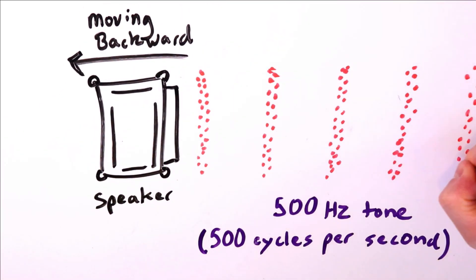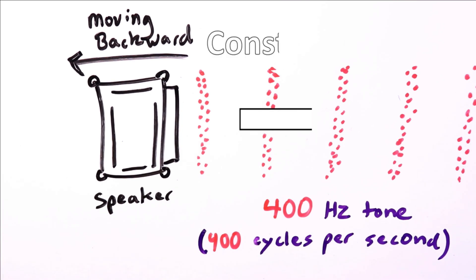If the speaker moves backward, we observe the opposite. Once again, the velocity of the waves in the air is constant, so instead of the waves moving slower, the speaker adds to the wavelength. The waves stretch out, this time to about 86 centimeters instead of the original 68. As a result, the frequency drops.